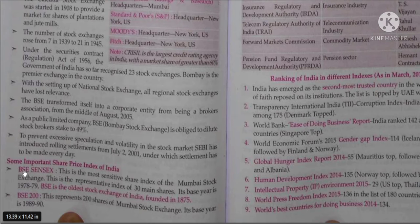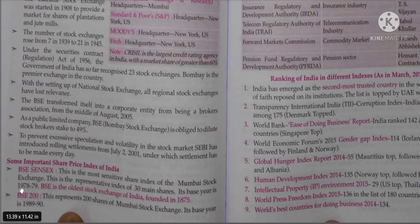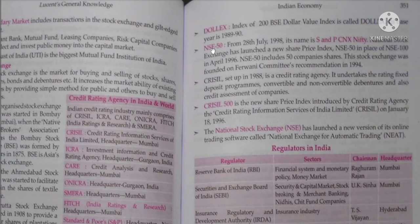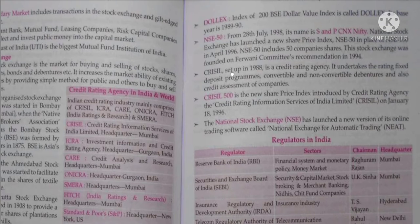Some important share price indices of India: First, BSE Sensex — this is the most sensitive share index of the Mumbai Stock Exchange. It is a representative index of 30 main shares, with base year 1978–79. It is the oldest stock exchange in India, founded in 1875. BSE 200 represents 200 shares of the Mumbai Stock Exchange, with base year 1989–90. The Dollex is the BSE dollar value index, also with base year 1989–90.